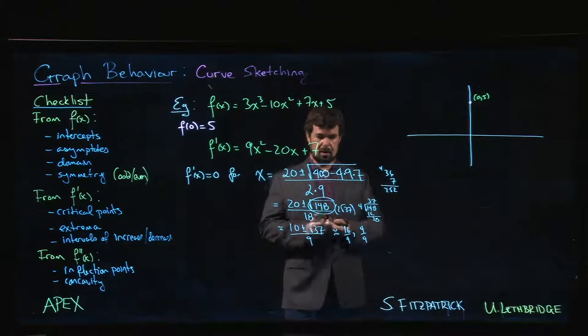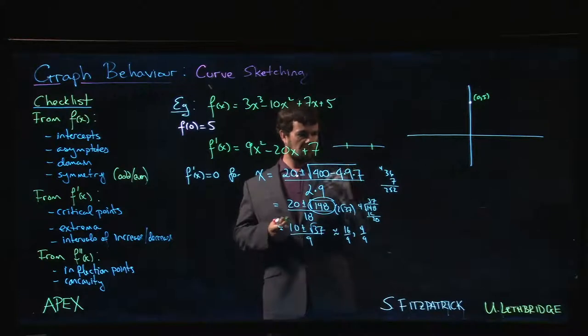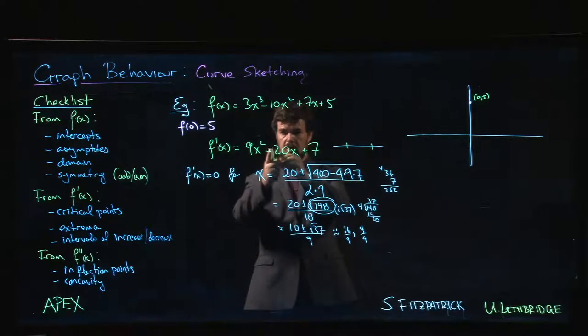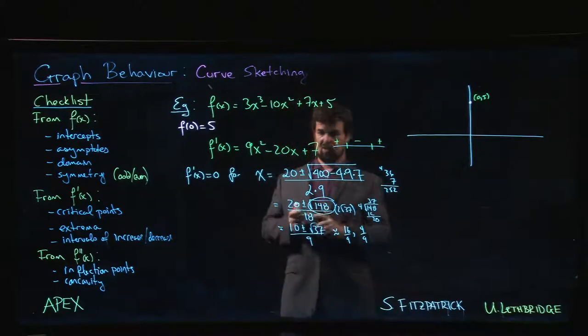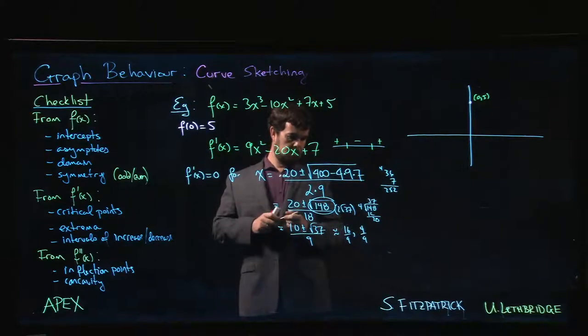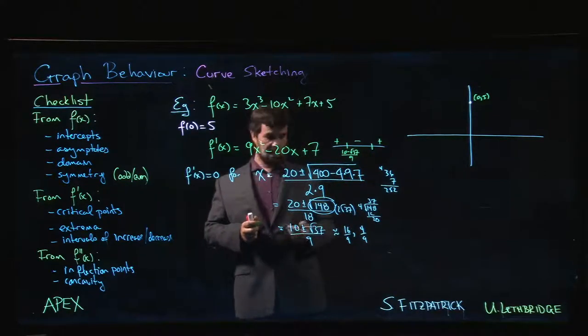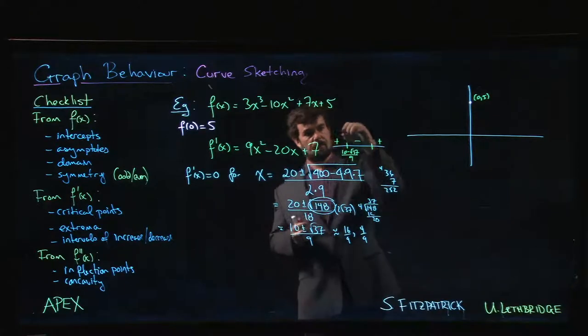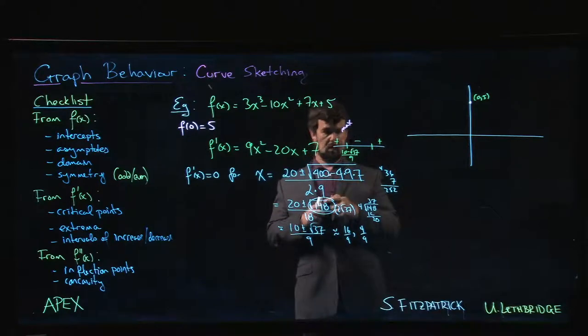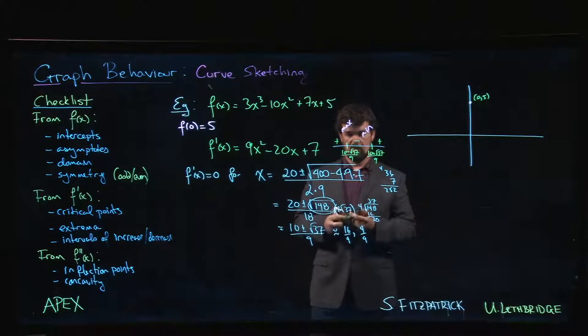We plot these two zeros. We're not going to worry about putting down the exact values, but what we do know is that this is a quadratic opening upwards, so it's got to be positive outside the roots, negative inside. Now we know that we've got a function which is increasing until we hit this one, which is 10 minus root 37 over 9, the one that's a little bit less than a half. This is going to be increasing to decreasing—that's going to be a max. Then decreasing to increasing, so here we have a min at 10 plus root 37 over 9.